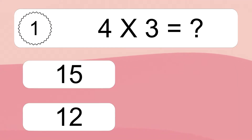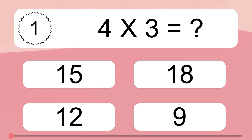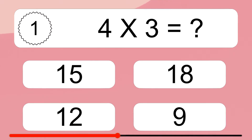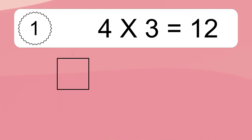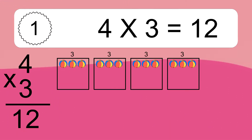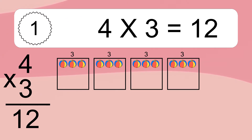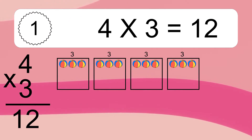4 times 3 equals what? 4 times 3 equals 12. We have 4 boxes and each box has 3 colorful balls inside. If you count all the balls in all the boxes together, you will have 4 times 3 balls. This equals 12 balls.